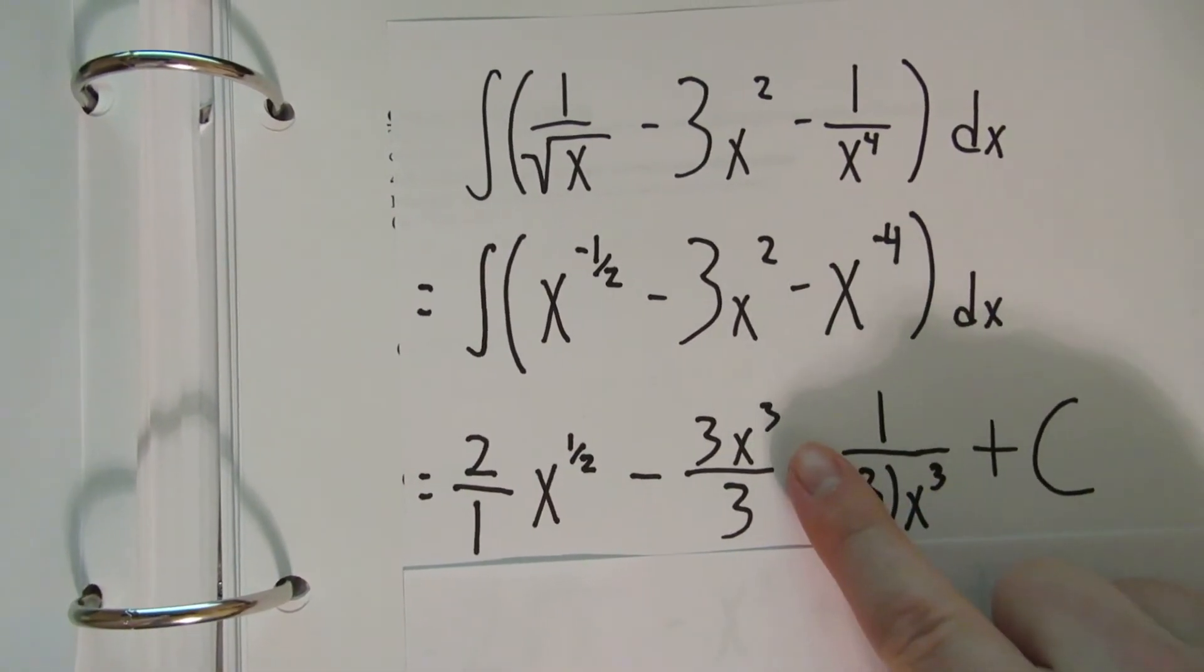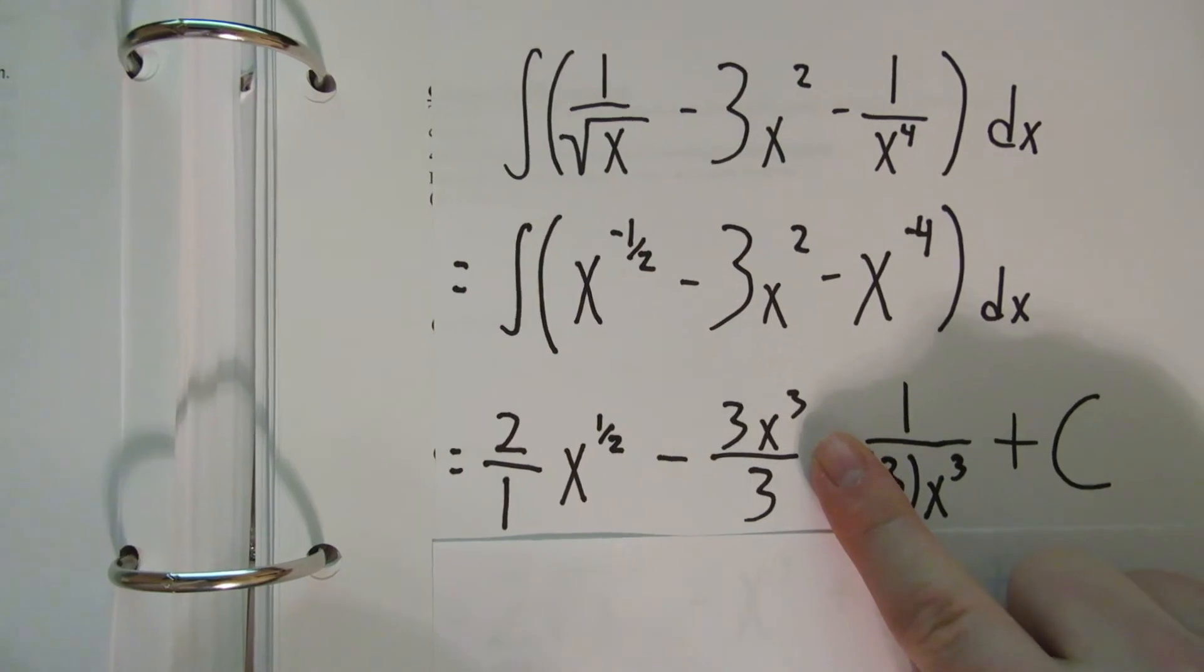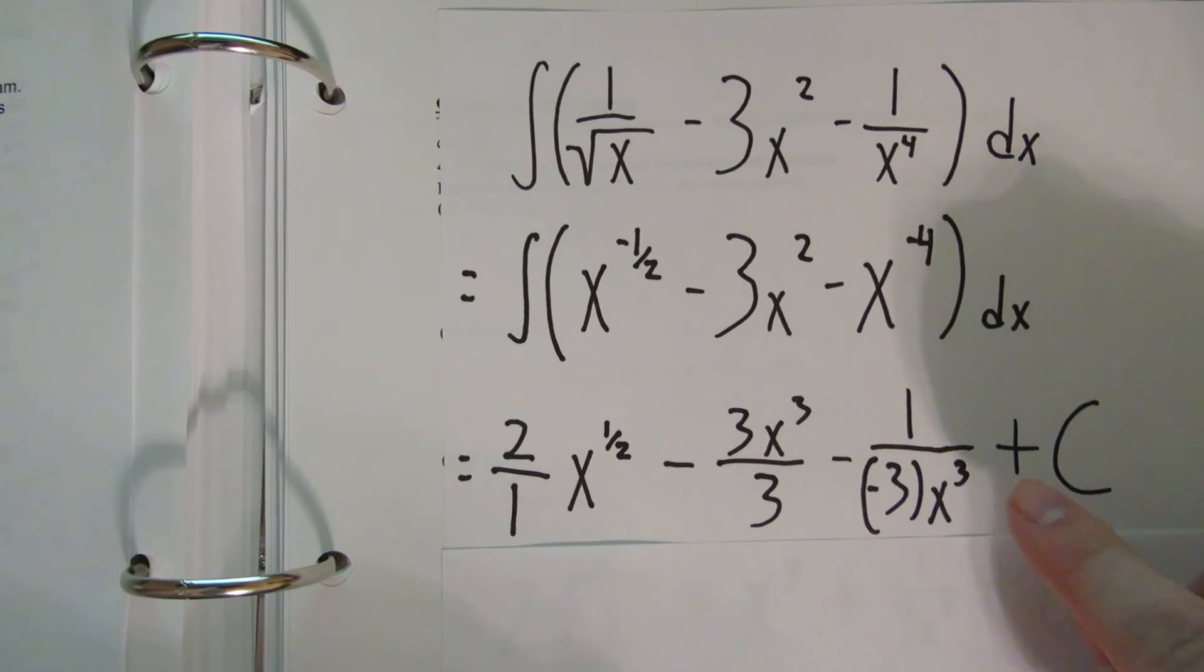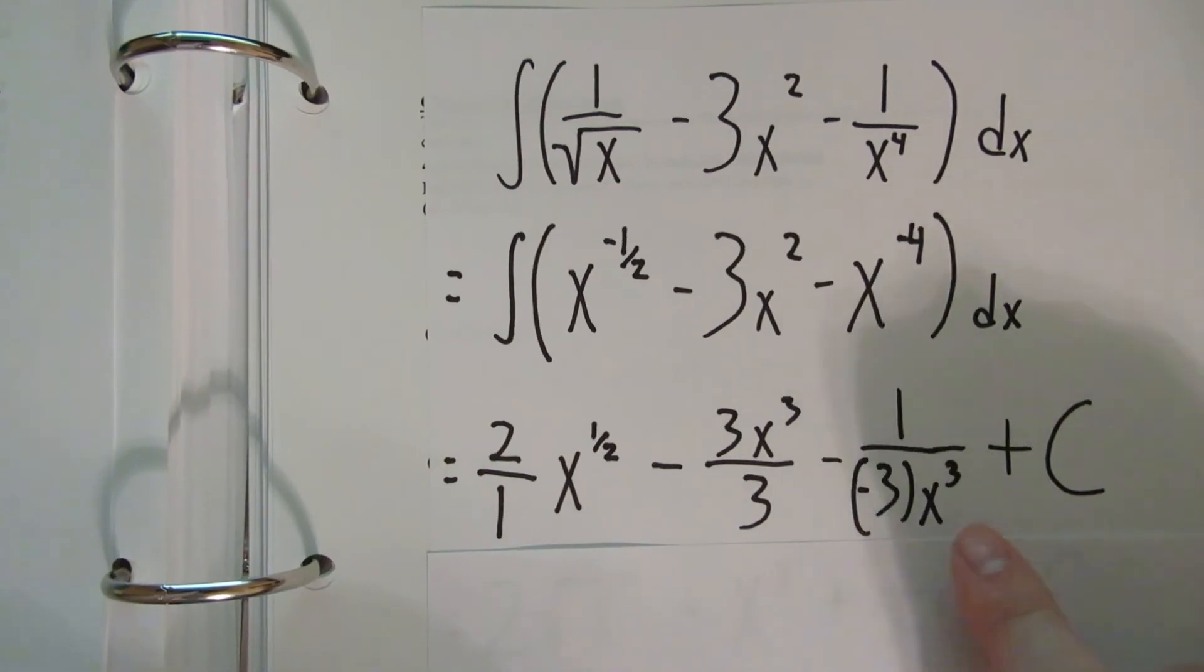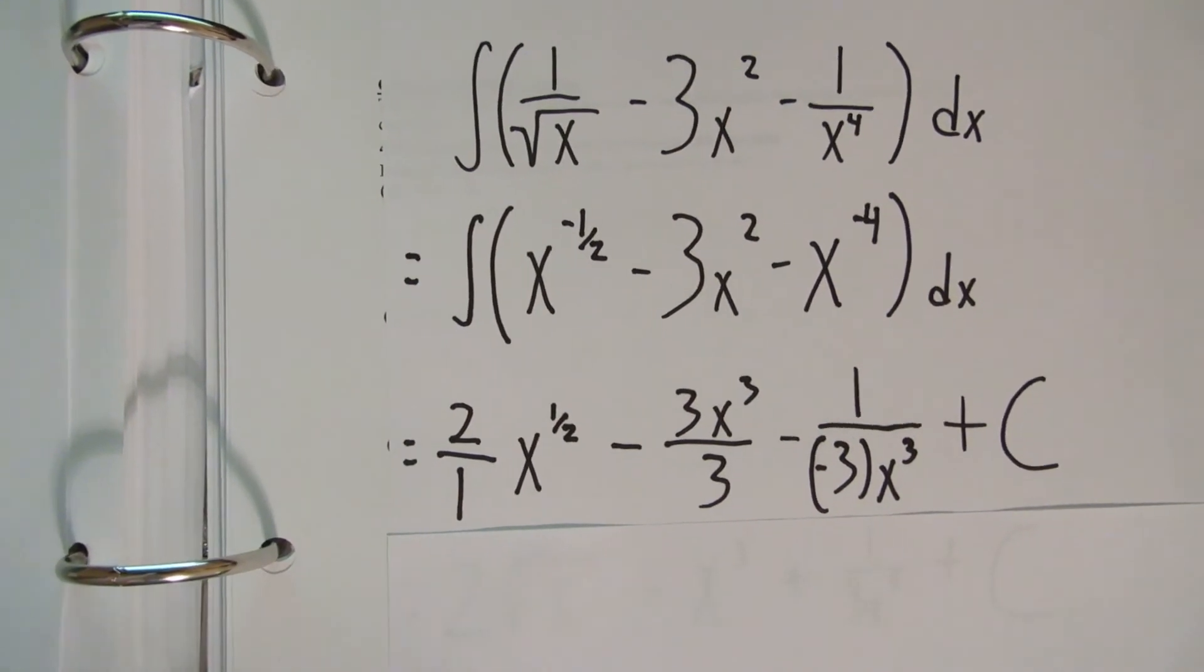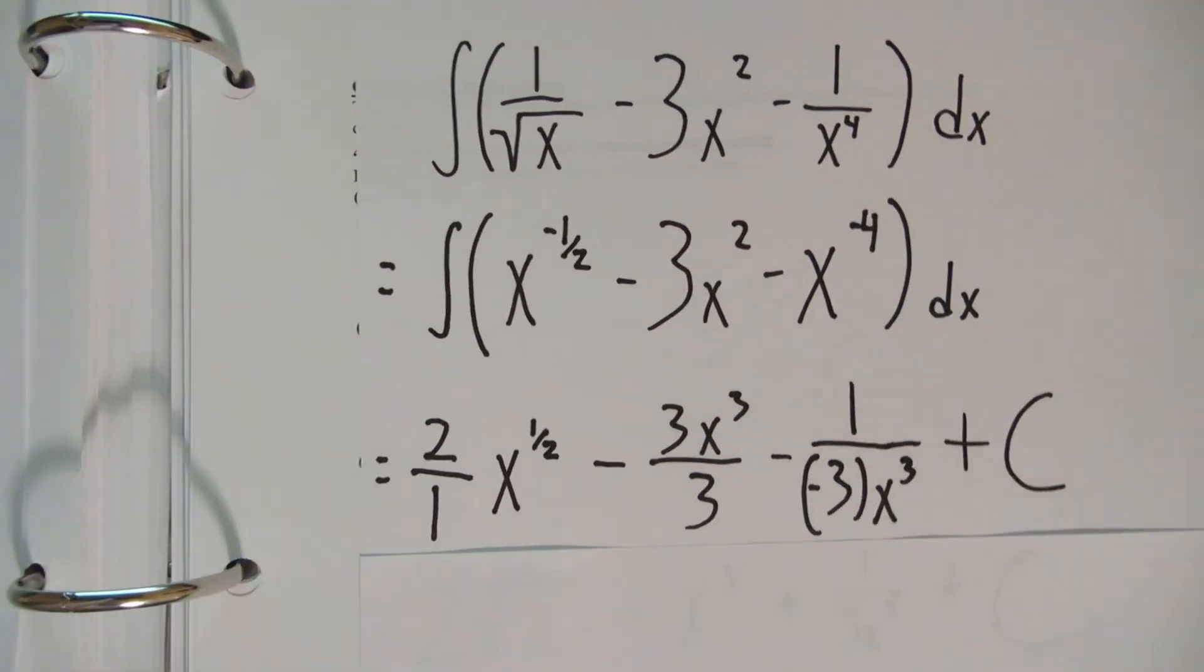As you can see here, we raise the power to 3 and then divide it by 3. Raise the power to negative 3 and then divide it by negative 3. And I already put it back in the bottom of the fraction. And you add your constant at the end, since this is an integral.